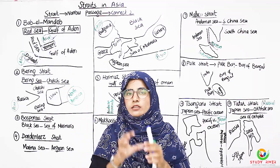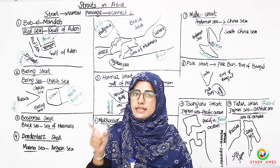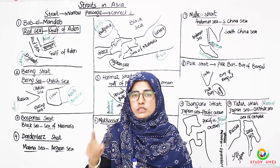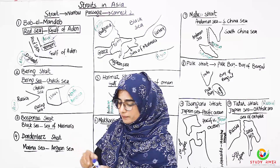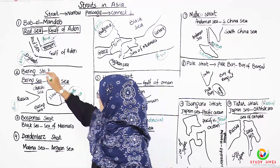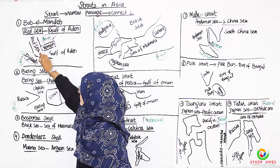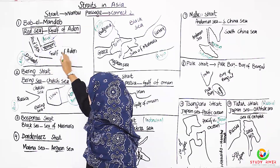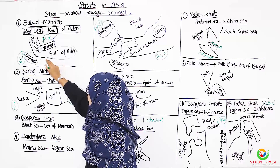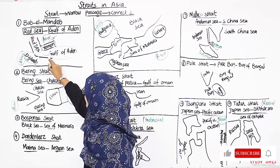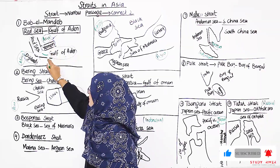Now we will see which two water bodies are connected to each other. The Gulf of Aden is on one side. Looking at the picture, this is the Gulf of Aden on one side, and the Red Sea is on the other.